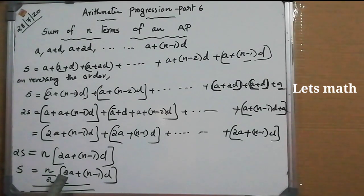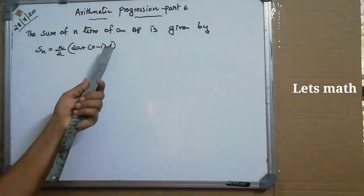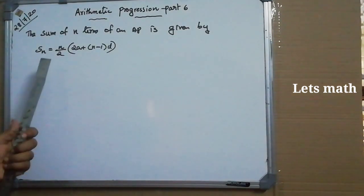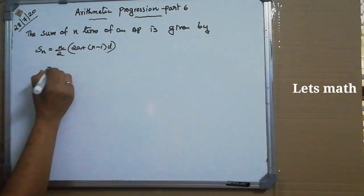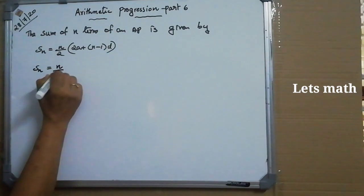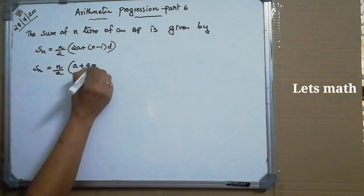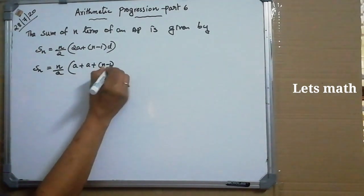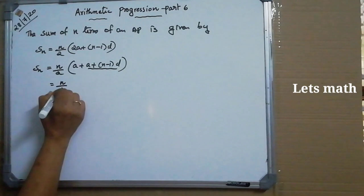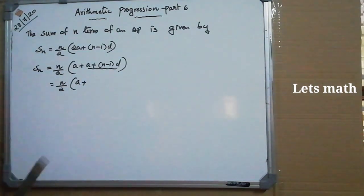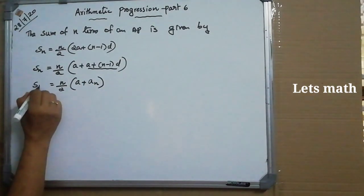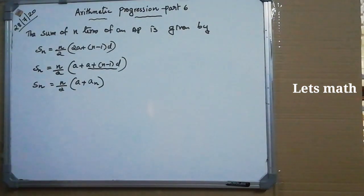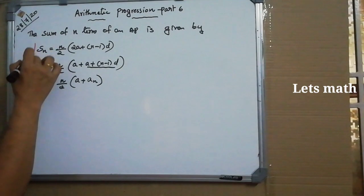This can be rewritten as: Sn = N/2 × [A + A + (N-1)D] = N/2 × [A + An], since A + (N-1)D is the Nth term, An. So the sum of N terms is also given by Sn = N/2 × (A + An).